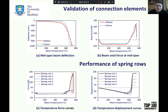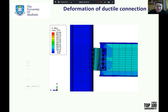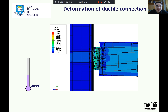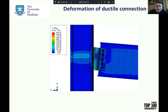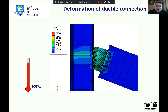Soon after, the other spring components will fail row by row in the same manner. When all spring components fail, the connection is considered as failed in the model. This figure shows the deformation of the ductile connection with increasing temperature in Abaqus and the sub-frame model. At low temperatures, the connection is compressed due to the thermal expansion of the beam. When the temperature exceeds 700 degrees, the deformation of the connection becomes tensile. The good deformation capacity of the ductile connection is well demonstrated by these figures.